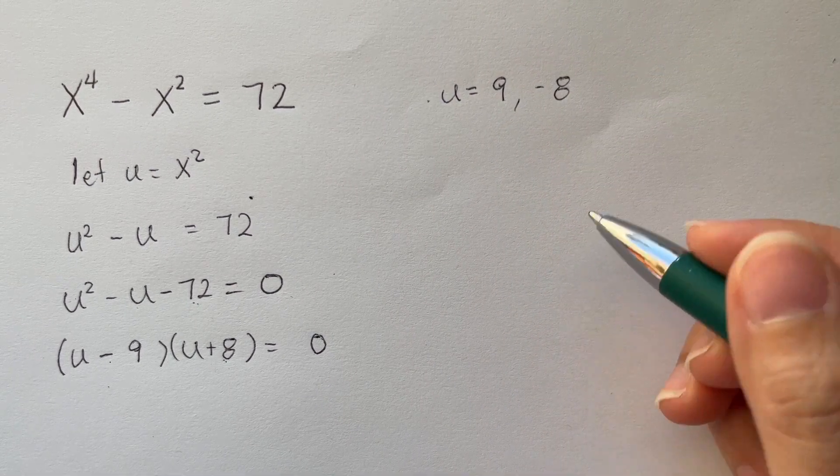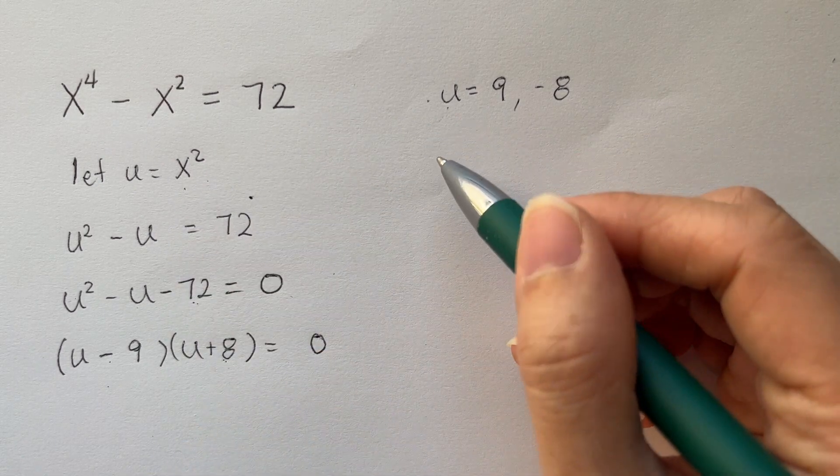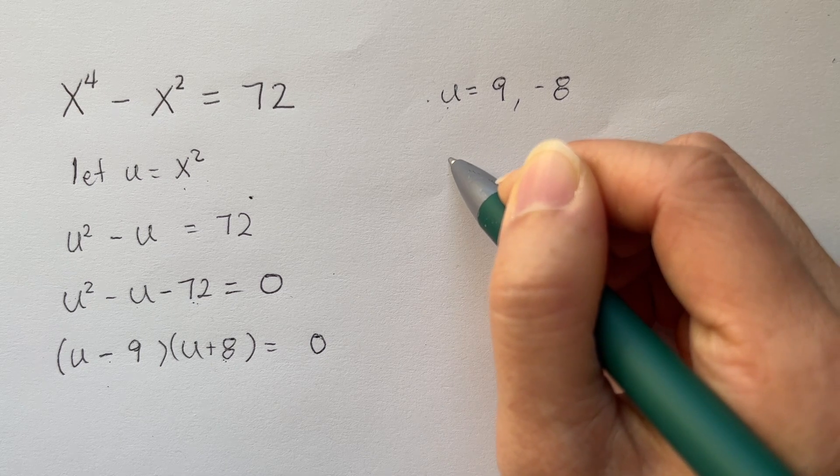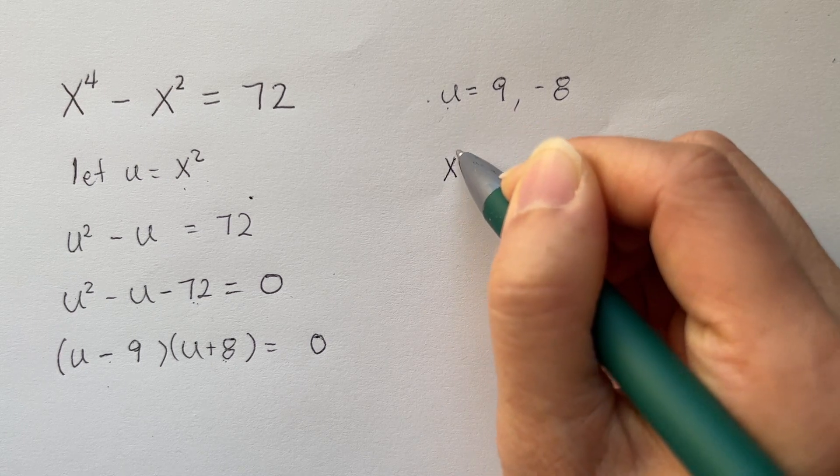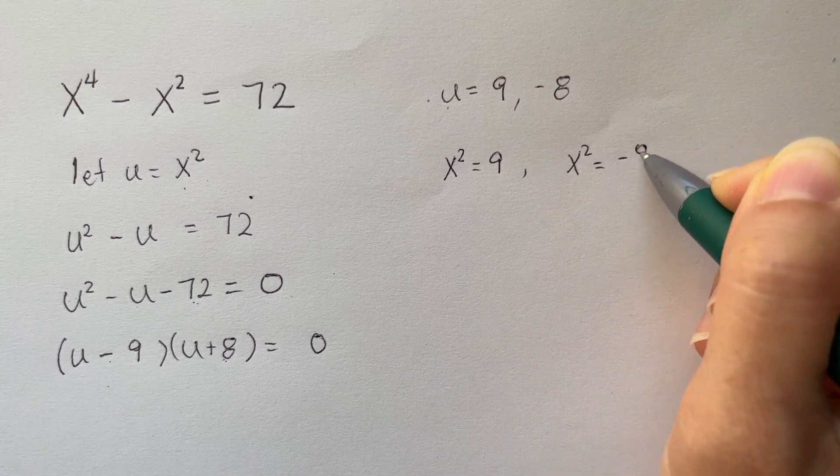Now, what is u? Now we need to substitute this back into x. And we have u is equal to x squared. So this becomes x squared is equal to 9, x squared is equal to negative 8.